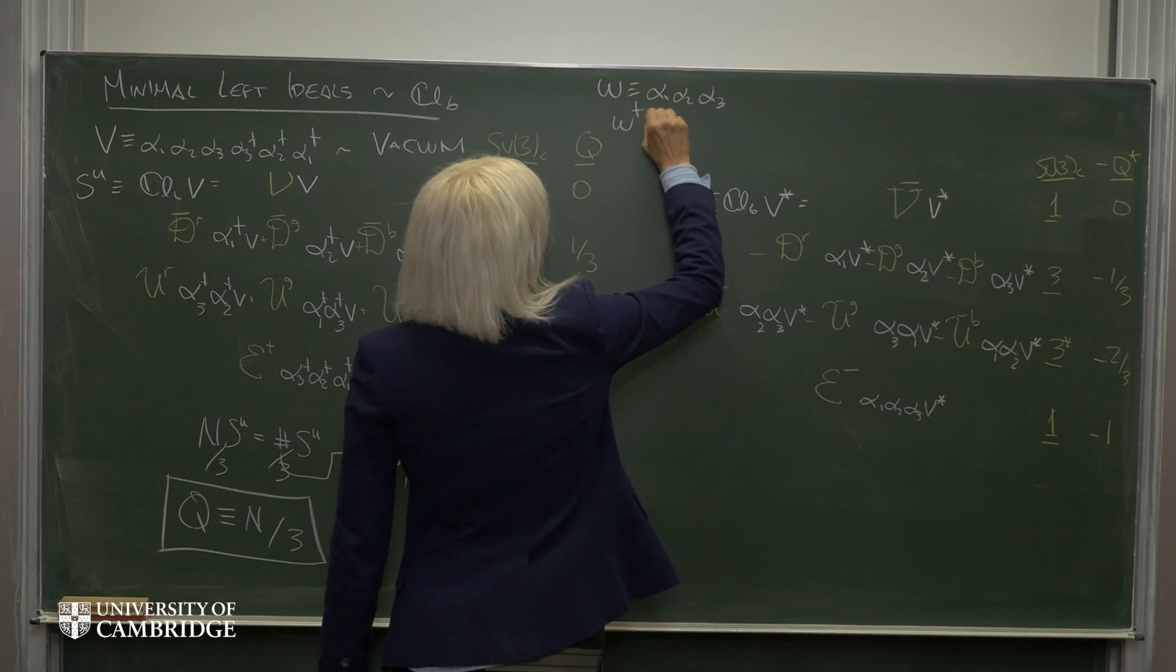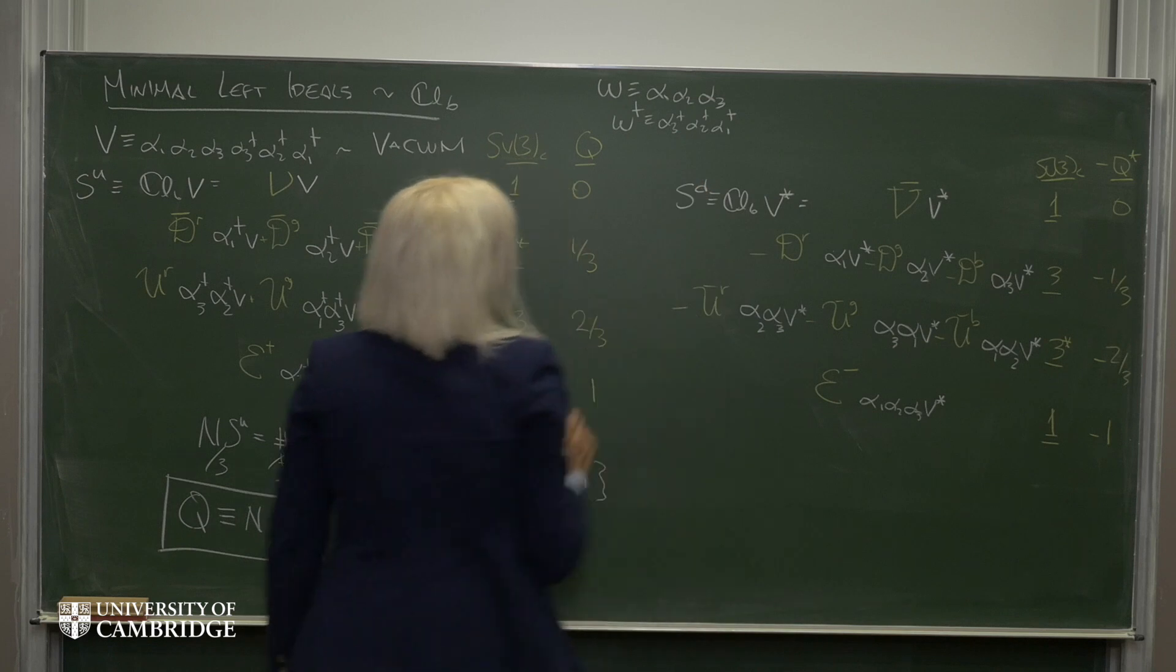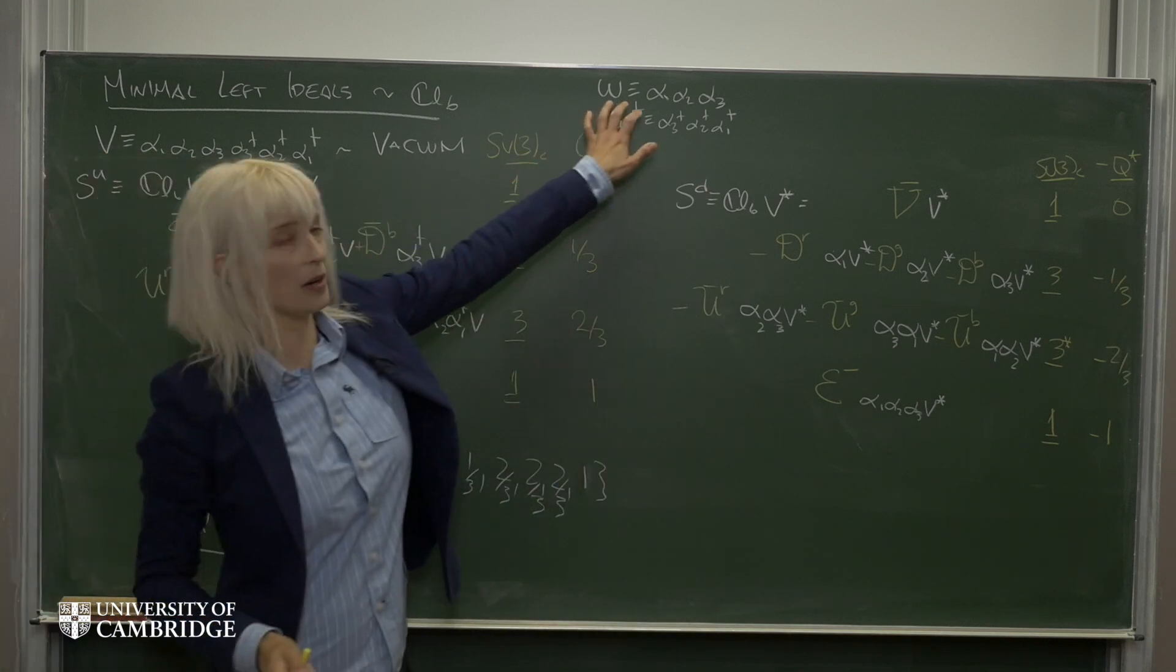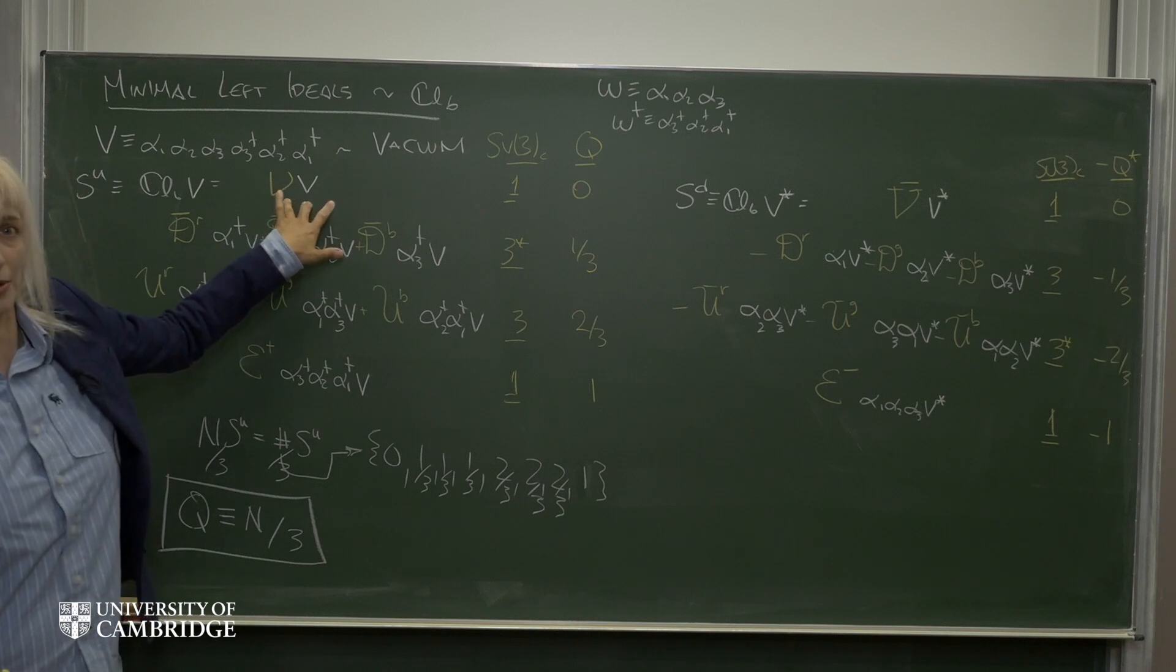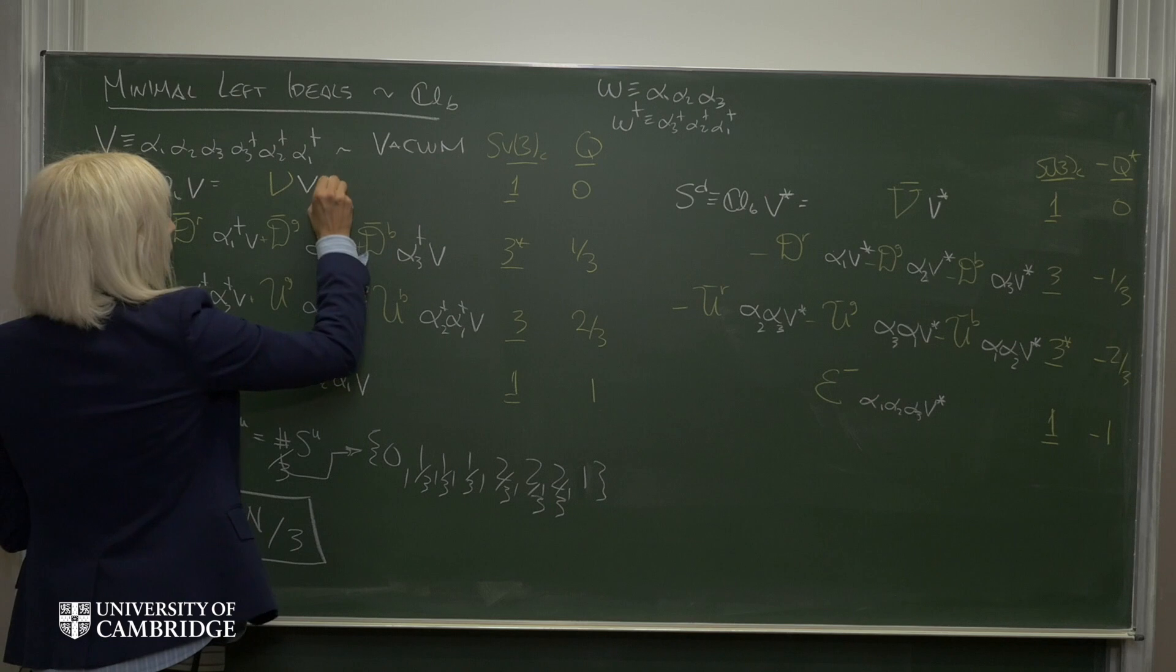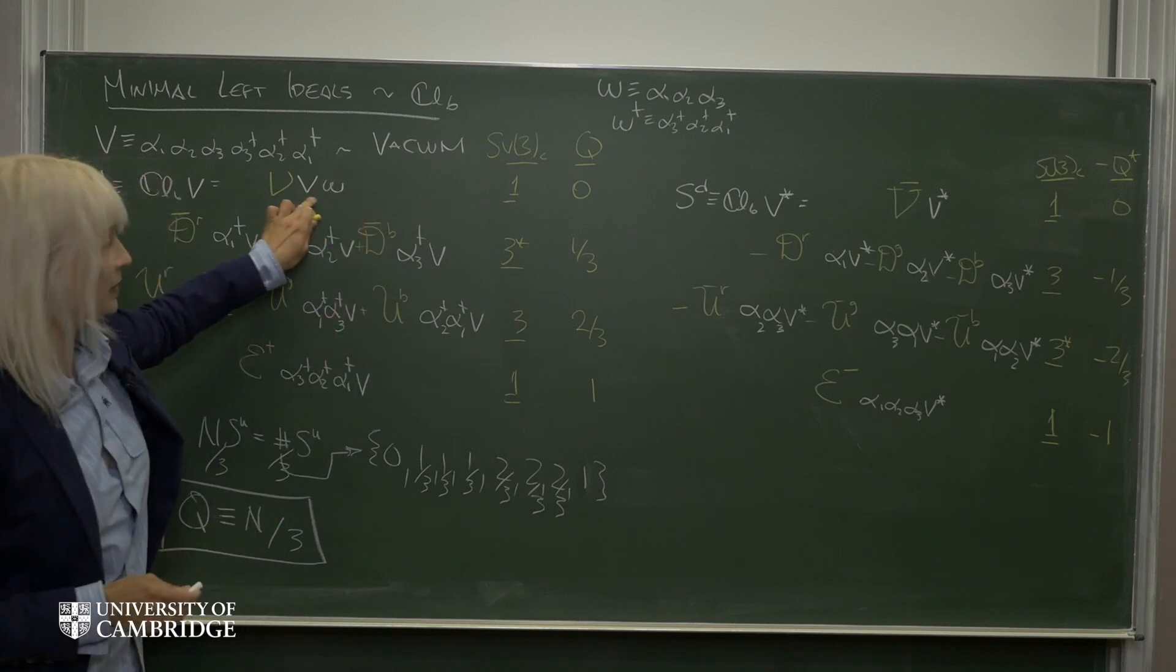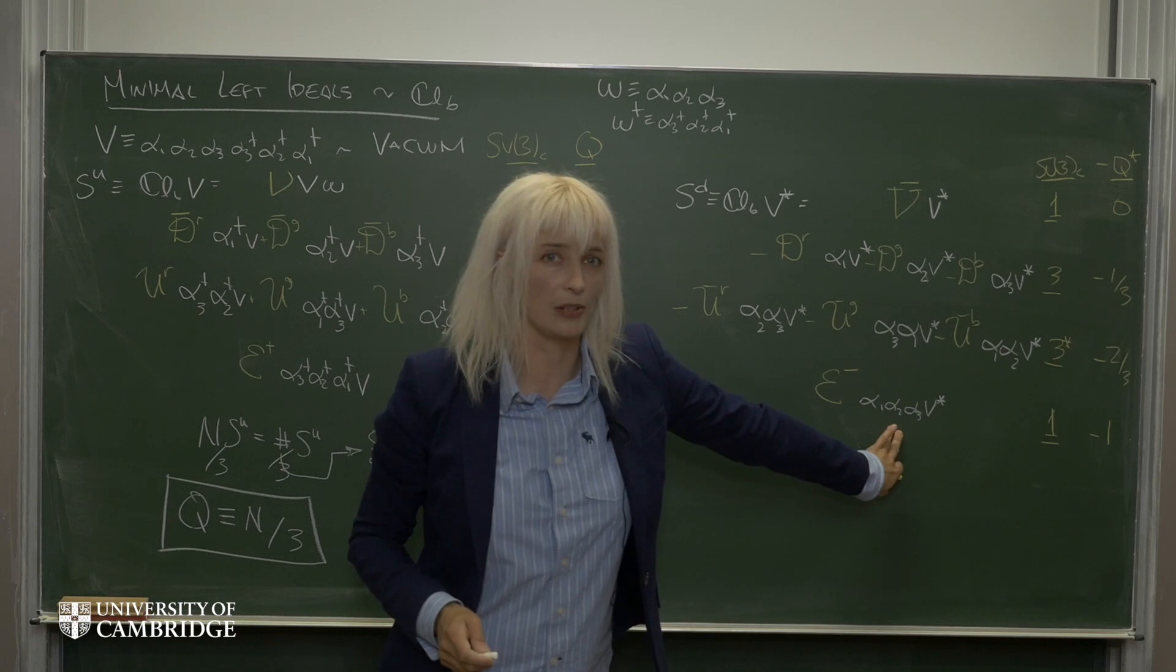let's say we take this omega and right-multiply it onto the basis vector that corresponds to the neutrino. Then I would find that this object gives me the basis vector for the electron.